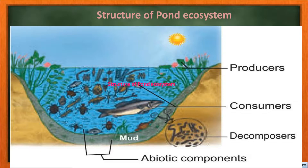Biotic components also include consumers. Consumers include zooplanktons like Paramecium and Daphnia, which are considered primary consumers. Benthos are organisms that live at the bottom of the pond — they are bottom-living animals like mollusks and annelids.